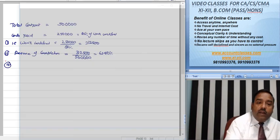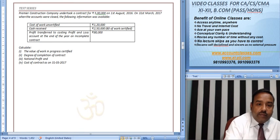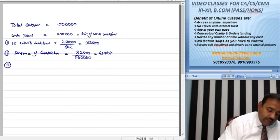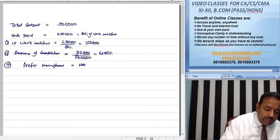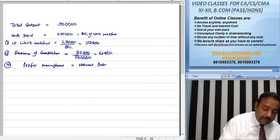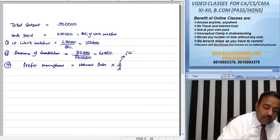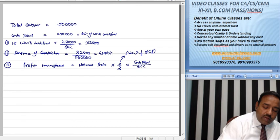The third answer has asked you, the notional profit is how much? So, profit transfer is equal to notional profit times 2/3 times 1/2 of contract price times cash received upon work certified.